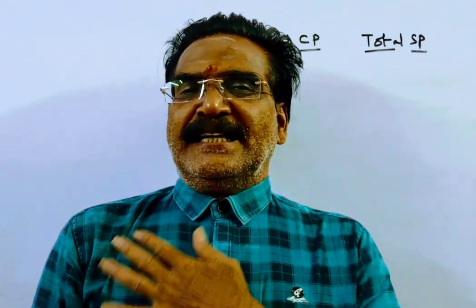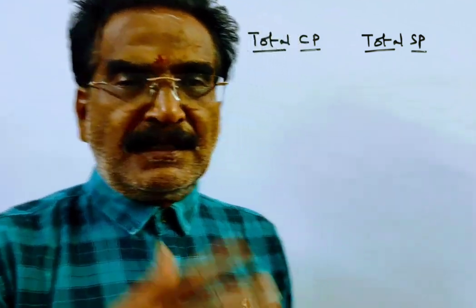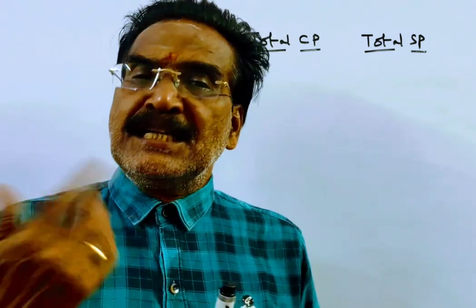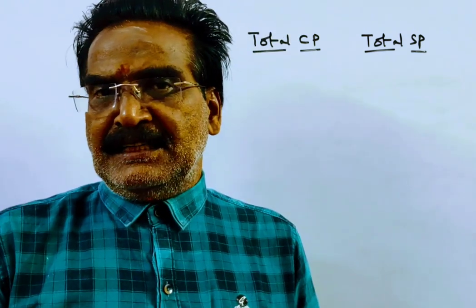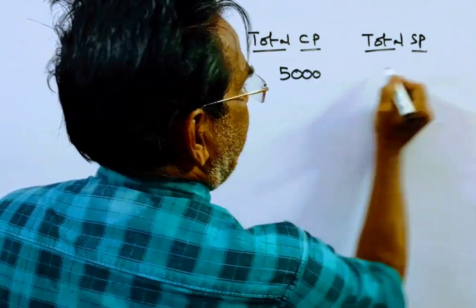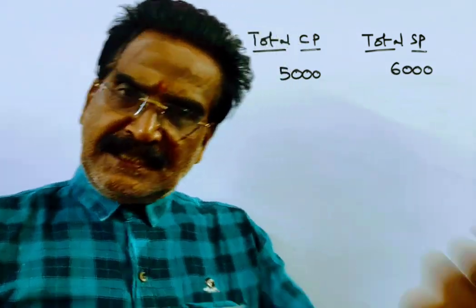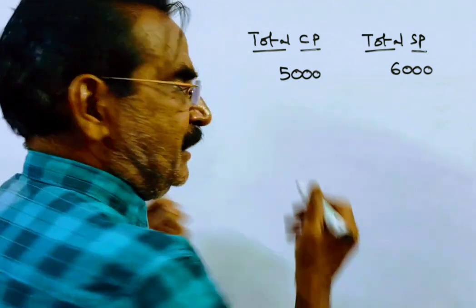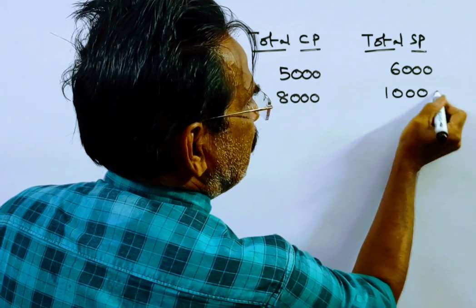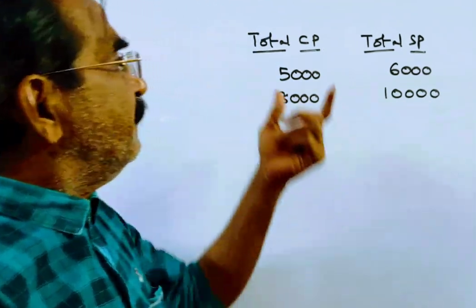Hi friends, good morning. Please look at the next problem in profit and loss — the problem is given in the description box. A man purchases a machine for rupees 5000 and after one year sold it for rupees 6000. So cost price is 5000, sold price is 6000. After two years he purchases the same machine for rupees 8000 and sold it for rupees 10,000. What is his net gain or loss percent?